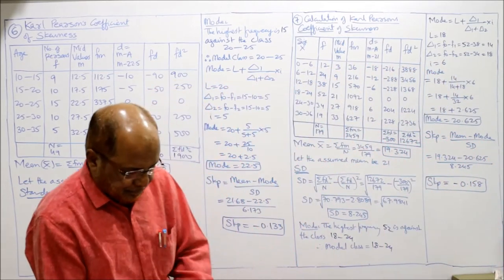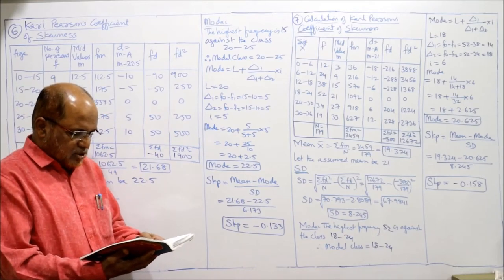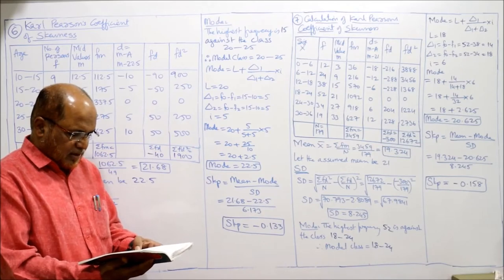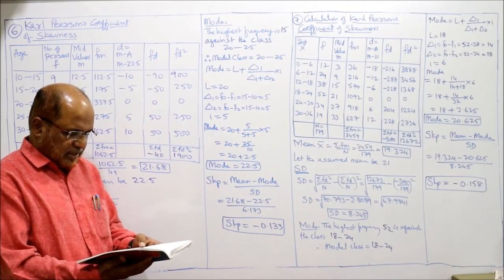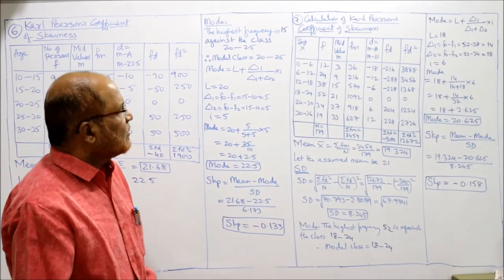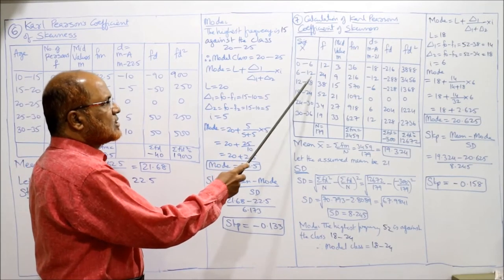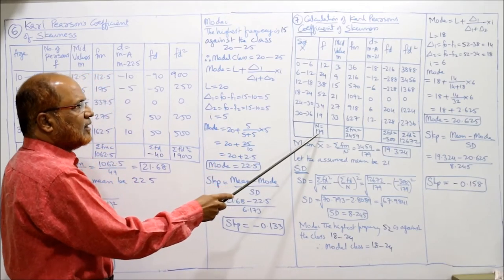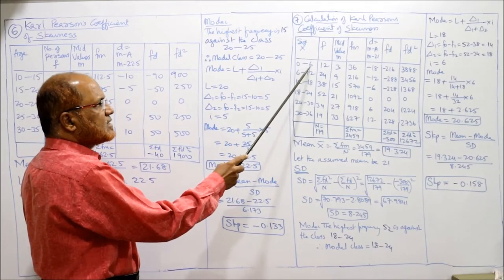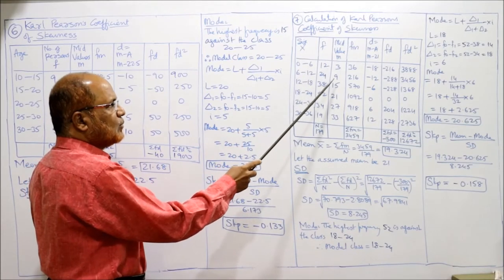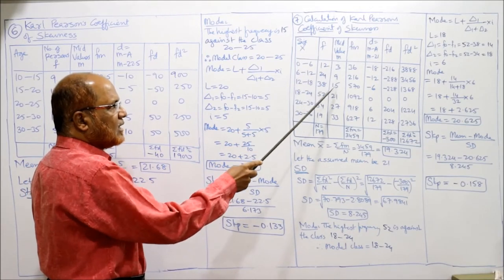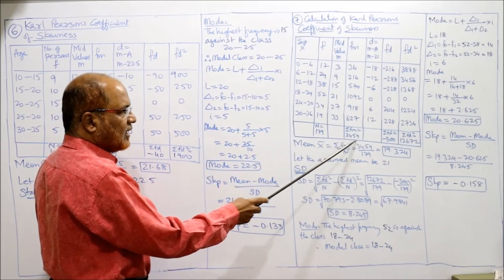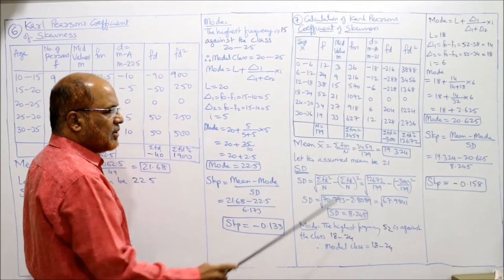Problem number 7: Compute coefficient of skewness based on Pearson's formula. Size: 0 to 6, 6 to 12, 12 to 18, and so on. Frequency: 12, 24, 38, etc. It's a continuous frequency distribution. n = 179. Mid values: 3, 9, 15, etc. Multiplying f×m gives fm; total Σfm = 3459.